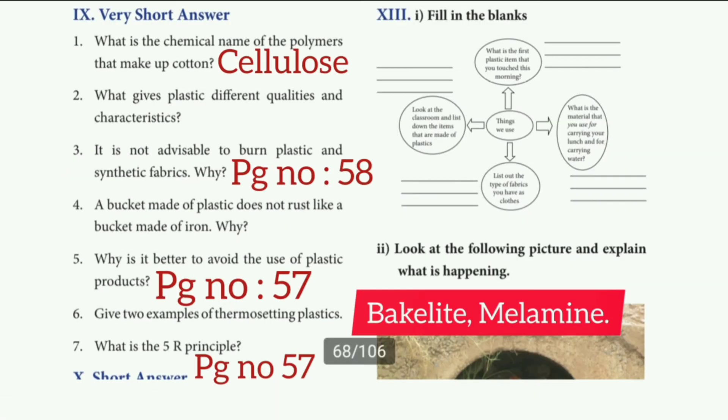Sixth question: give two examples of thermosetting plastic. The answers are Bakelite and Melamine.